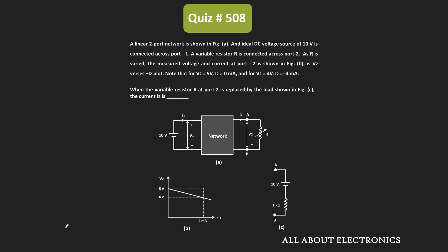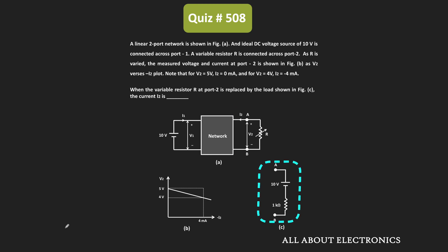Now in the same network, this variable resistor R is replaced by the load given in figure C. With this load, we have been asked to find the current I2. Let us see how to find the value of this current I2.